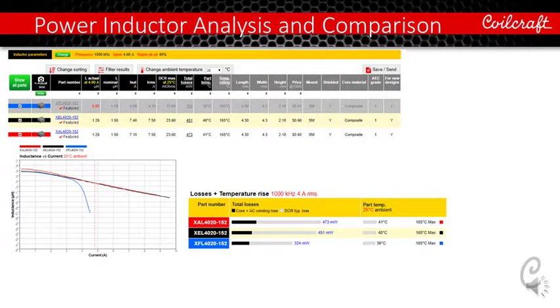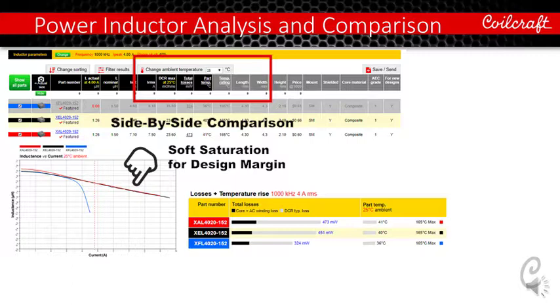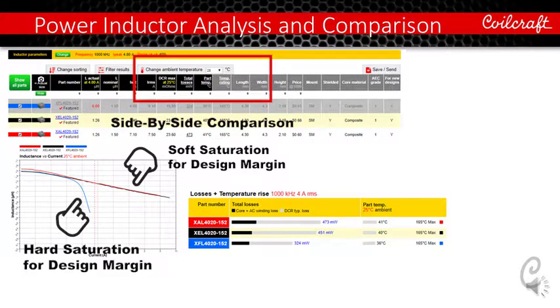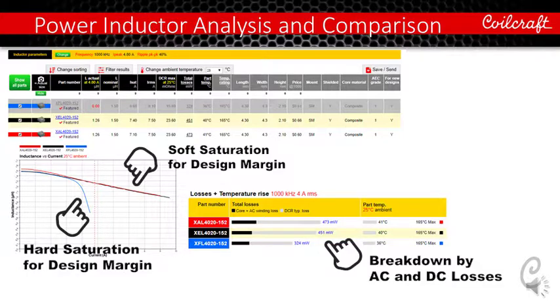When we click the analyze and compare button, the analysis graph showed more details of the comparison. Here you can see both XAL and XEL had the softer saturation characteristics to withstand higher peak current. XFL on the other hand has more hard saturation. So this makes it not a recommended part for this converter. Again, the eye peak requirement for this converter is 4.8 amps. XFL4020-152 is already saturated in that region.